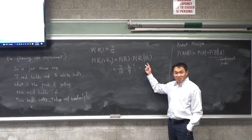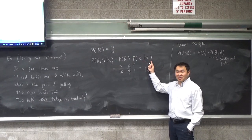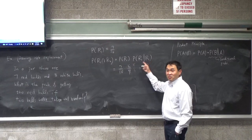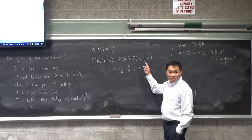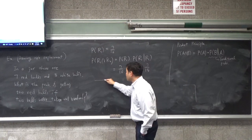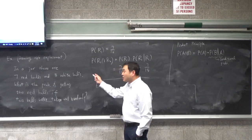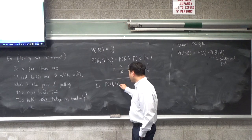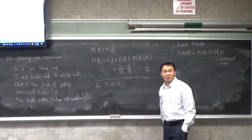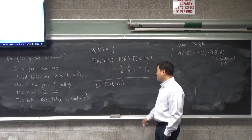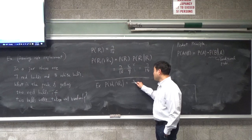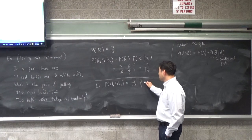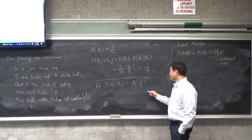This example makes conditional probability clear. Sometimes if an event happens, it changes the probability of the second one. Another question you can ask with the same setup: what's the probability of getting a white bowl on the first drawing and then a red bowl on the second? That's 3 out of 10 for the first one, times 7 out of 9 for the second, giving 7 out of 30.